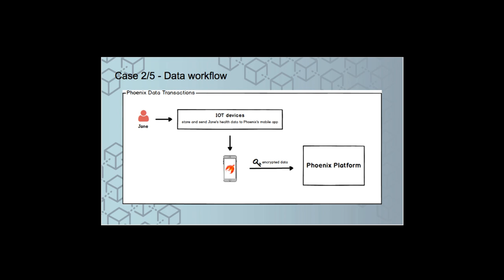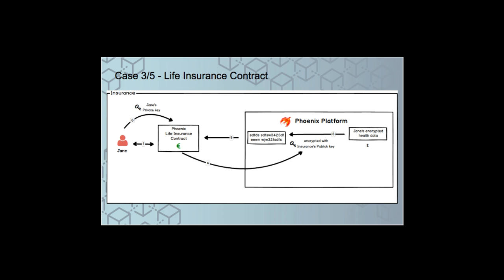How Phoenix can use James data? Once that James will activate the life insurance contract with Phoenix, the encrypted data that are stored into the Phoenix platform will be encrypted with the Phoenix public key and sent to the insurance agent that using the James private key will be allowed to get his data and estimate the insurance premium and or eventually provide bonuses or token rewards.